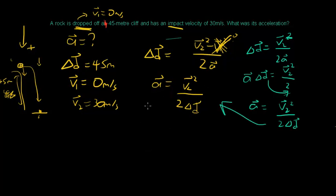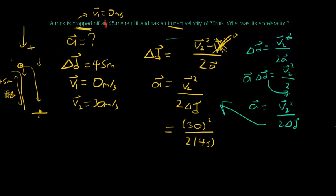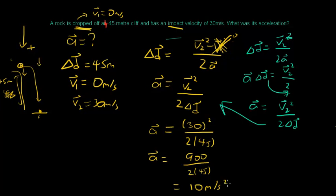Plugging in: a equals 30 squared over 2 times 45. All values are positive since down is positive. That gives us 900 over 90, which equals 10 meters per second squared. Positive means downward, which makes sense — the rock was pulled by gravity accelerating it downward.